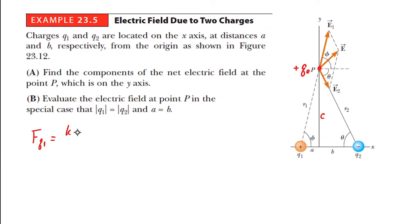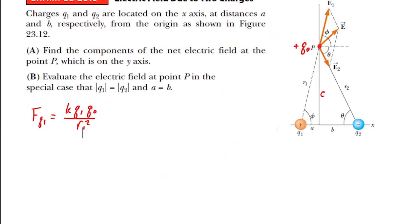The force on q₀ due to q1 is k·q1·q₀/r1² in a certain direction, and the force due to q2 is k·q2·q₀/r2². We need to put these into vector components. We then have a vector sum at some angle — both magnitude and direction must be accounted for.